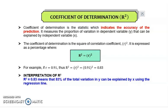Here I'm going to explain the coefficient of determination, R squared. The coefficient of determination is a statistic which indicates the accuracy of the prediction. It measures the proportion of variation in the dependent variable Y that can be explained by the independent variable X. The coefficient of determination is simply the square of the Pearson coefficient of correlation, and we normally express it as a percentage.